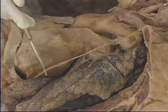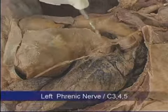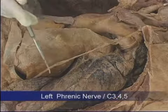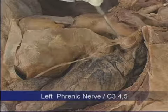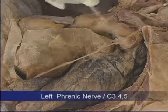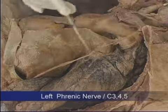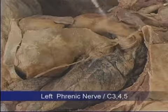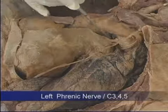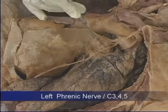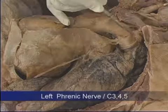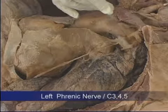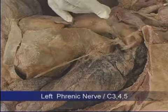Answer number four: this is the phrenic nerve and it comes from C3, C4, and C5. The main way to identify it is that it is a nerve you can trace from the thoracic inlet all the way to the diaphragm, lying anterior to the root of the lung. The vagus can be seen only in the upper part of the thoracic cavity, as it goes posterior to the root of the lung.